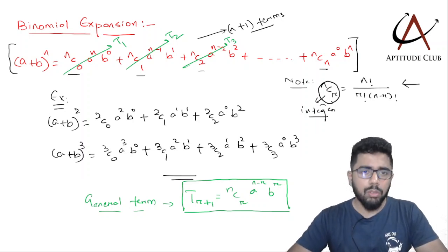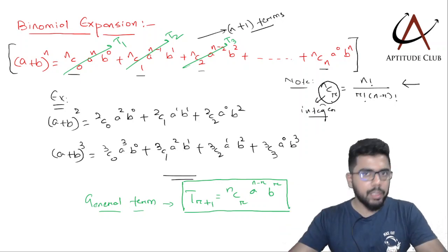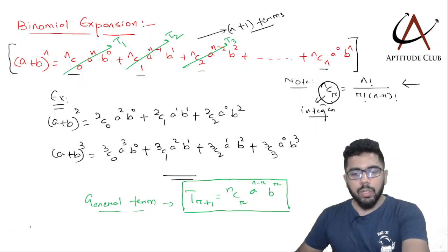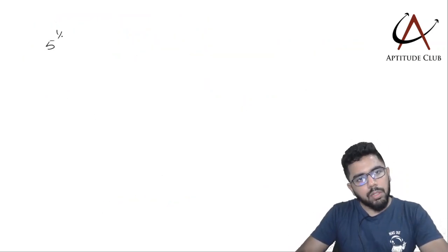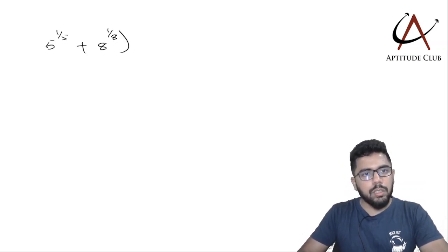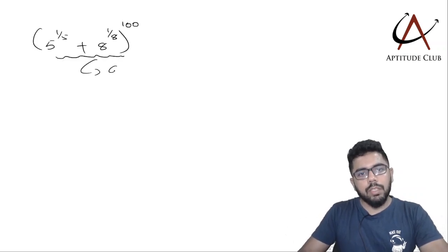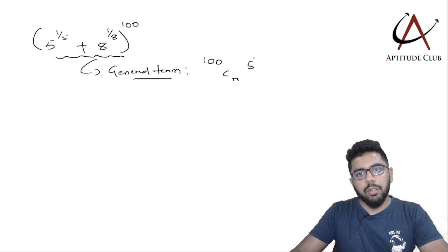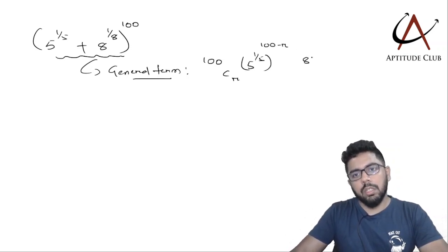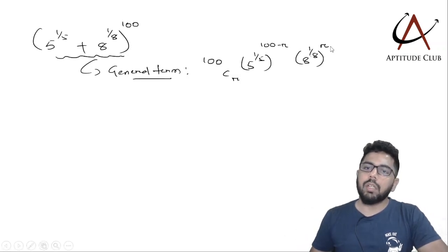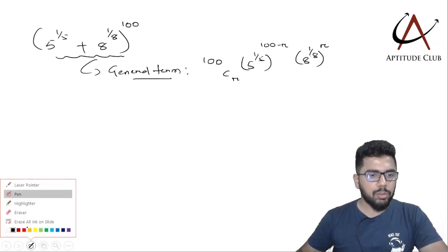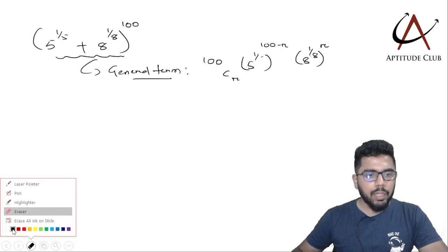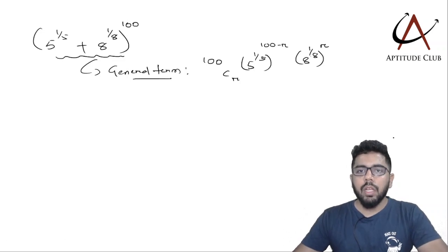This video is not a full treatment of binomial theorem — just enough to apply it to the question. The question is: (5^(1/5) + 8^(1/8))^100. Writing the general term of this expansion: it is 100Cr · (5^(1/5))^(100−r) · (8^(1/8))^r, where 5^(1/5) plays the role of a and 8^(1/8) plays the role of b.